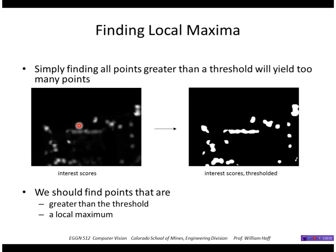So once I have an image of interest scores, I want to extract only a few of those as my most interesting points. I can do that by thresholding, but I would probably get too many points.